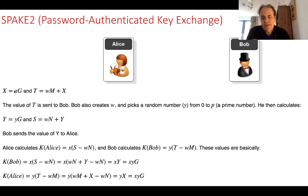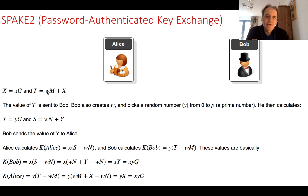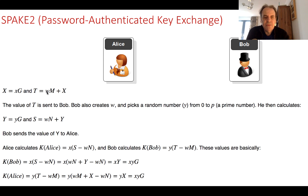Here is the basic method: Alice generates a random value x and takes g, a point on the elliptic curve, to calculate X, which is another point on the curve. She then computes w times M plus X, where X is this value, M is a well-defined point, and w is her password converted into an integer. This value T is then passed to Bob.